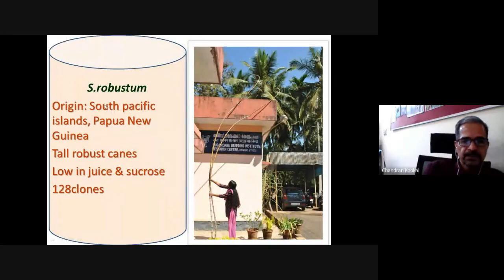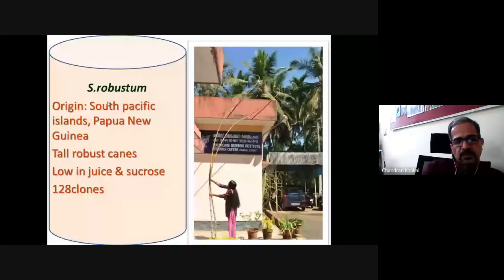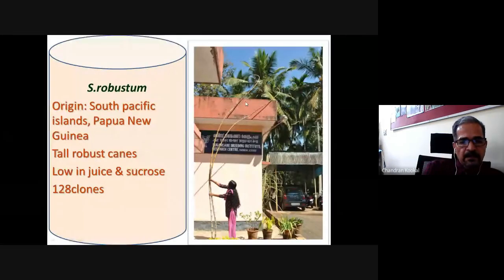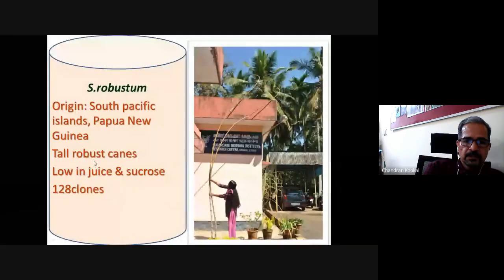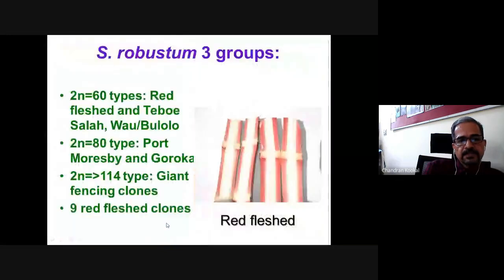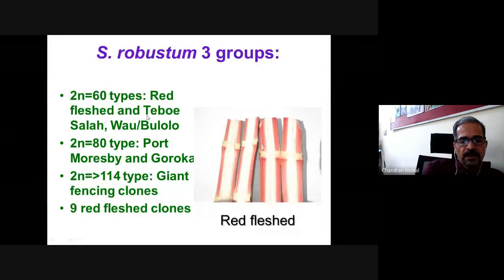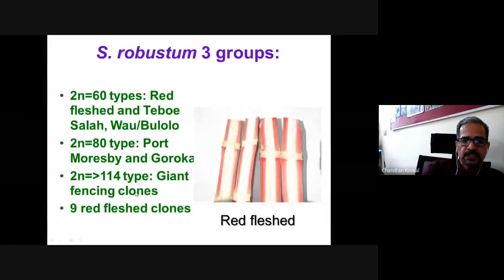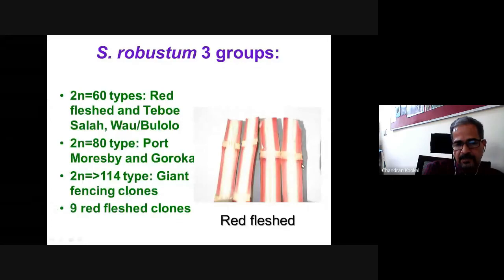S. robustum, one of the wild species, originated in south Pacific islands including Papua New Guinea. These are very tall, perennial-habited canes with low juice and very low sucrose content. The collection includes around 128 S. robustum accessions, including about nine red-fleshed types. S. robustum is classified into three cytotype groups: 2n=60 (including red-fleshed types Jibosala and Bulolo), 2n=80 (Mosby and Koroka types), and 2n greater than 114 (giant fencing clones used by Aboriginal people of New Guinea for gardens). The longitudinal section of the cane shows the red-flesh character with a whitish pith region.